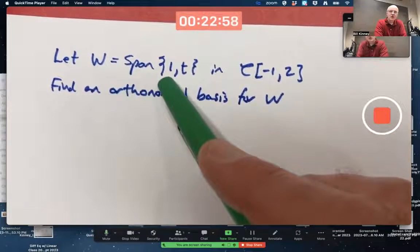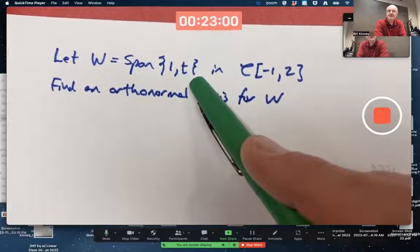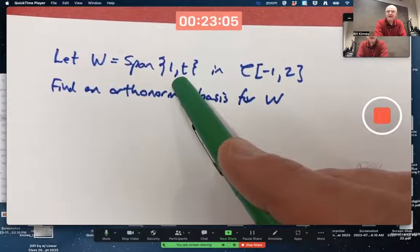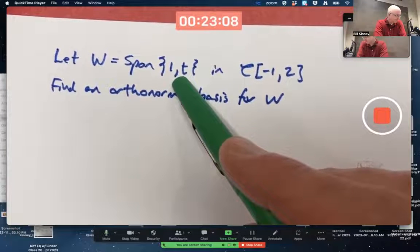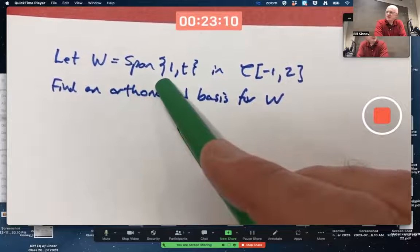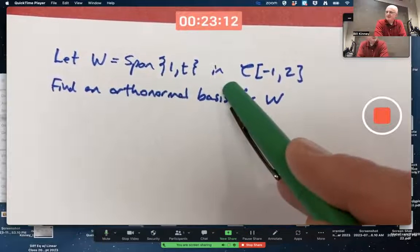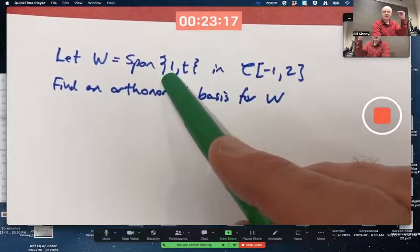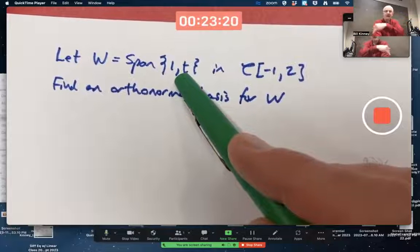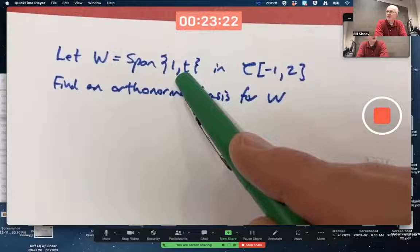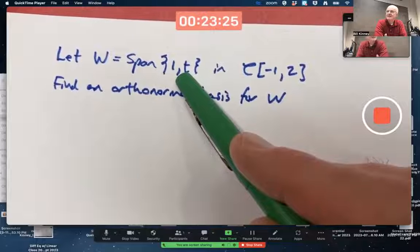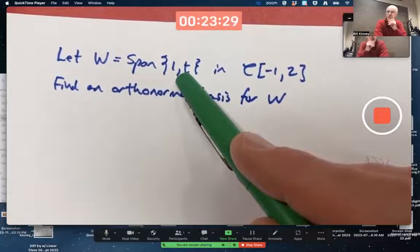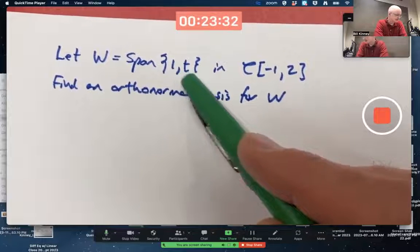W, however, is the span of two quote-unquote vectors, two functions that are not scalar multiples of each other. They are linearly independent functions. W is going to be a two-dimensional subspace of this. 1, what is that? That's the constant function. Graph is a horizontal line. t, that's the function t. Graph is a line through the origin with a slope of one. But we're thinking of these functions as being elements of a function space. Each function is one point or one vector or one element of the function space.